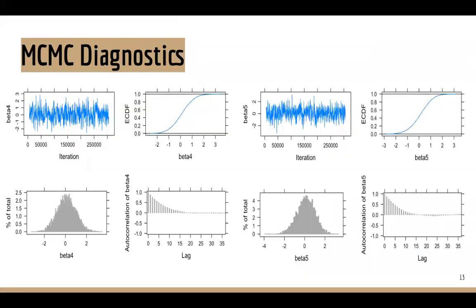We chose to highlight the MCMC diagnostics for two of our older age categories. Initially, the plots were not indicative of any convergence. However, through reducing our sample size and thinning the data, we were able to see where the trace plot showed better mixing of the data and the autocorrelation is reduced.